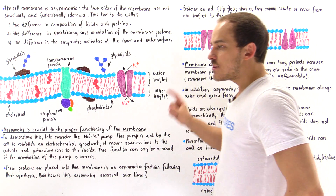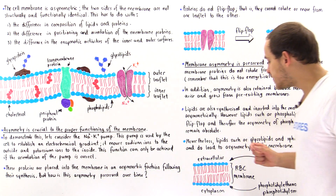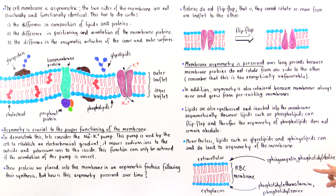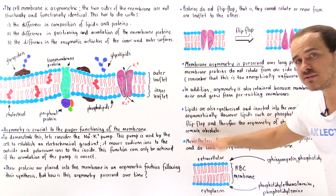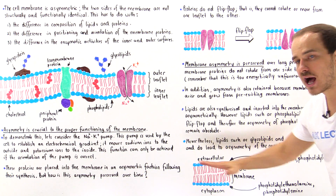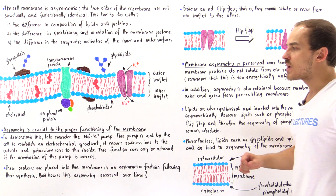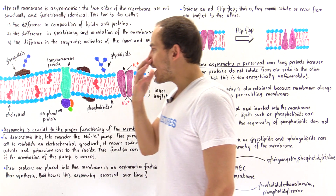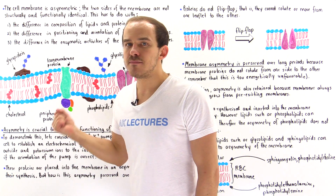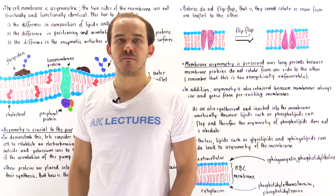If we study the membranes of red blood cells, we'll see that the outside layer consists of two specific lipids found in high proportion, while the inside contains a different two lipids in high proportion. Specifically, sphingomyelin and phosphatidylcholine are found on the outside, while the other two lipids are found predominantly on the inside. So it is not only the proteins, but also the lipids that give rise to the asymmetric nature of the phospholipid bilayer membrane.